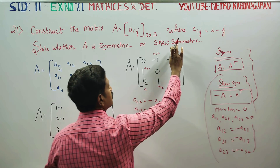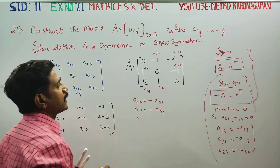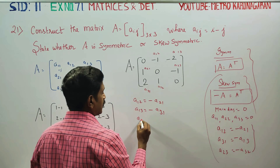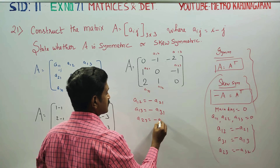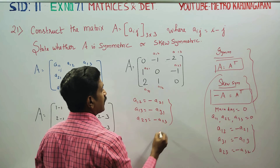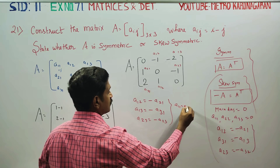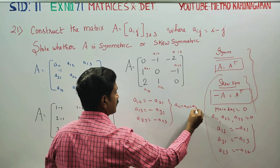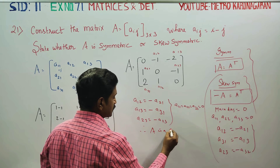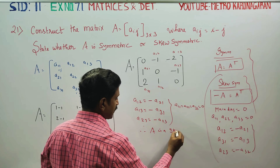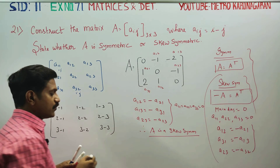The first row third element and the third row first element are negatives of each other. A23 is equal to minus of a32, and all principal diagonal elements a11, a22, a33 are equal to 0. Therefore A is a skew symmetric matrix.